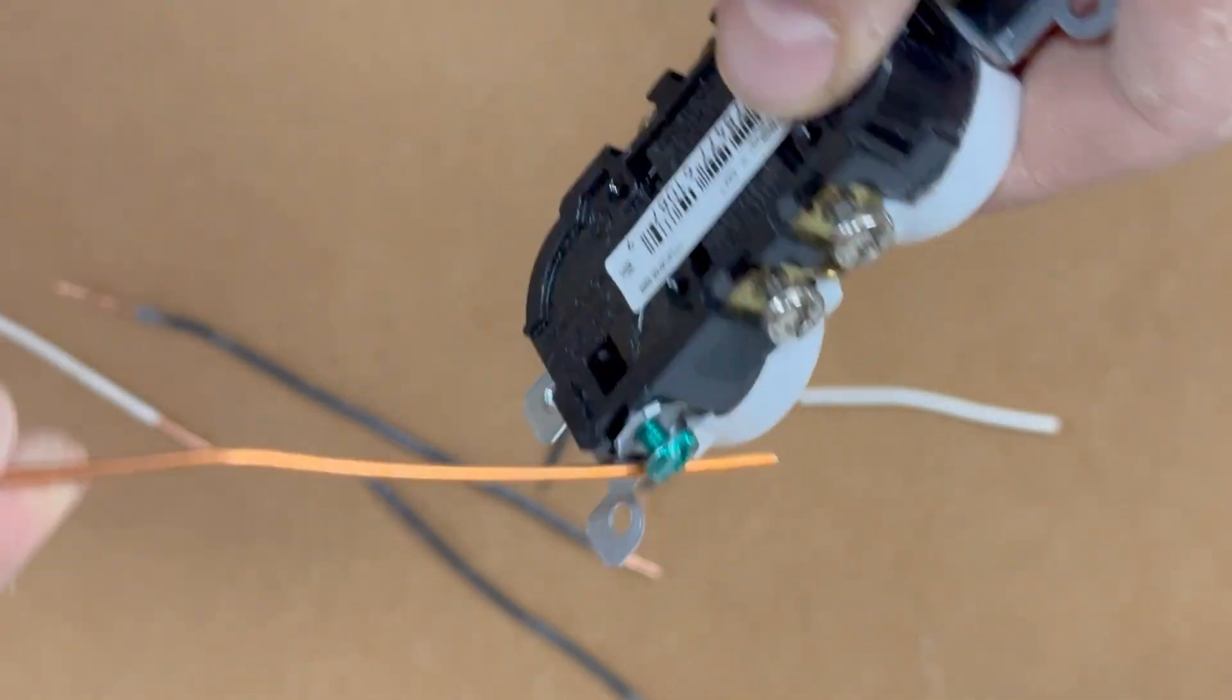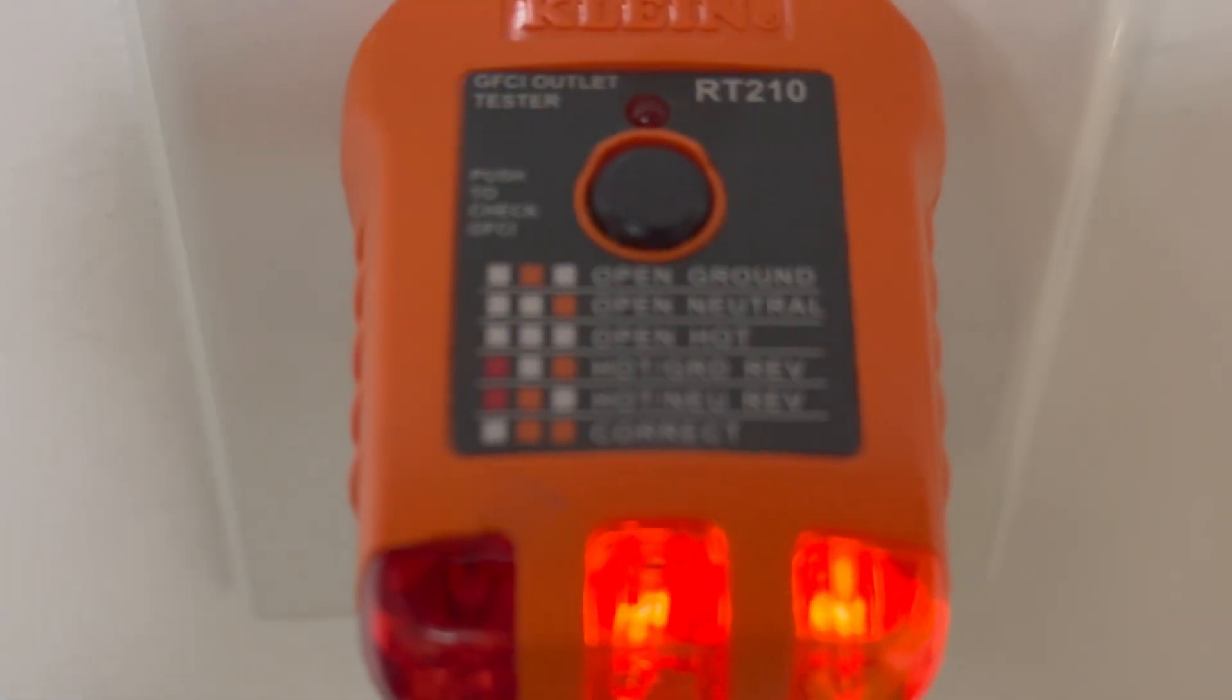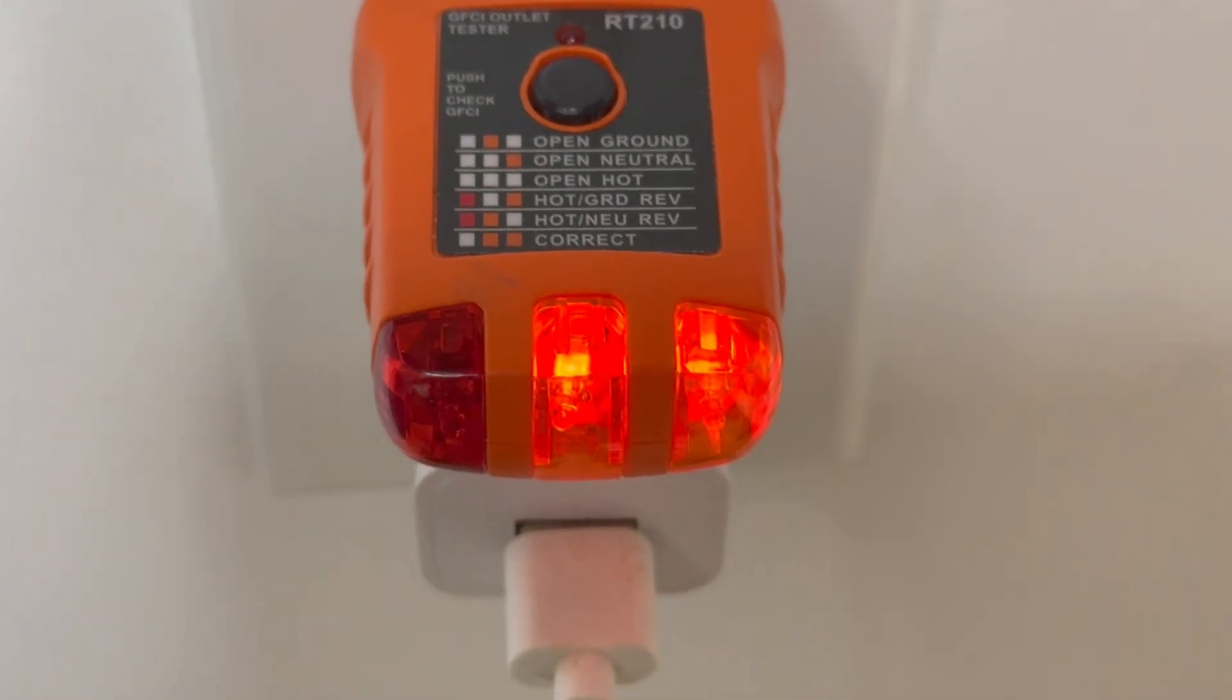Additionally, the neutral wire should always be connected to the green screw. To ensure that all your connections are correct, use a plug-in tester to confirm that everything is wired properly.